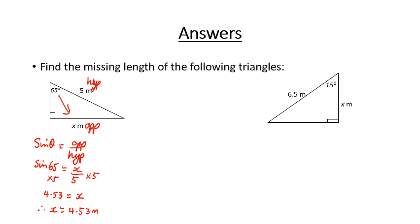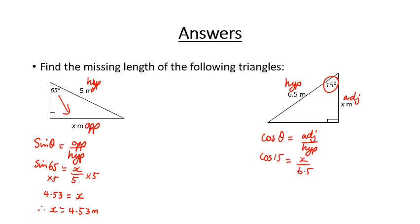In the second example, we have our hypotenuse and we're trying to find the adjacent with our theta, so we're using cosine. Cosine of theta equals adjacent over hypotenuse. Cosine of 15 equals x over 6.5. Multiplying both sides by 6.5 gives an answer of 6.28, so x equals 6.28 metres.